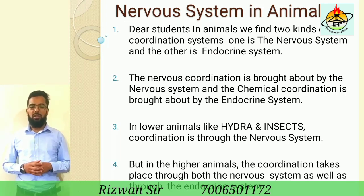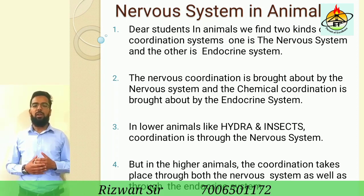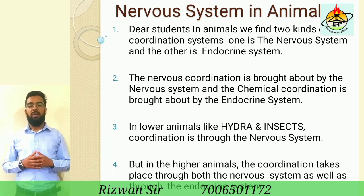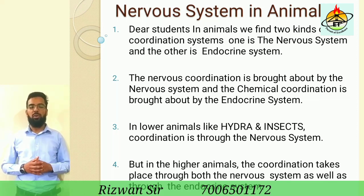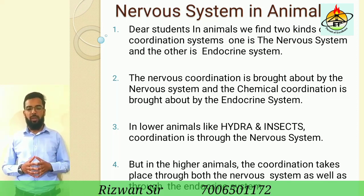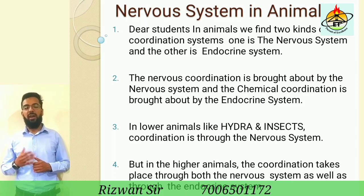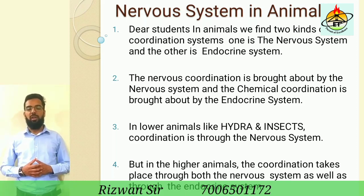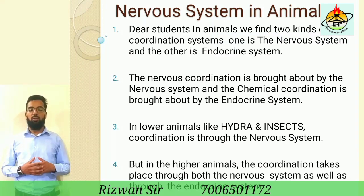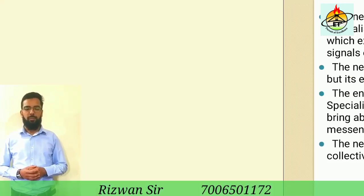The nervous coordination is brought about by the nervous system, and the chemical coordination is brought about by the endocrine system. In lower animals like hydra and insects, coordination is through the nervous system. But in the higher animals — the vertebrates — coordination takes place through both the nervous system as well as the endocrine system.